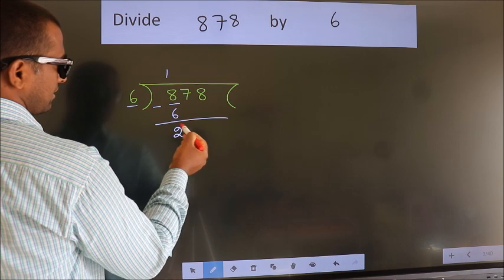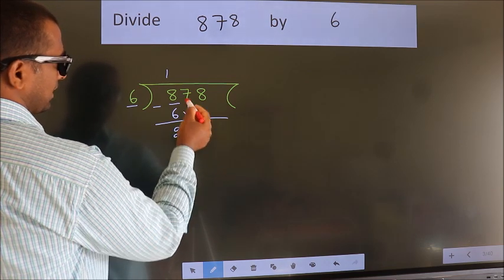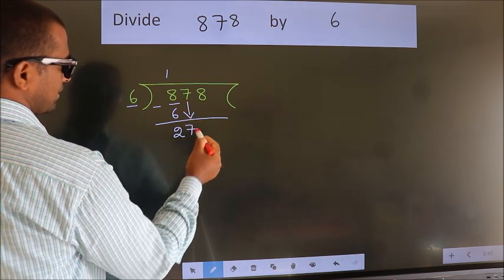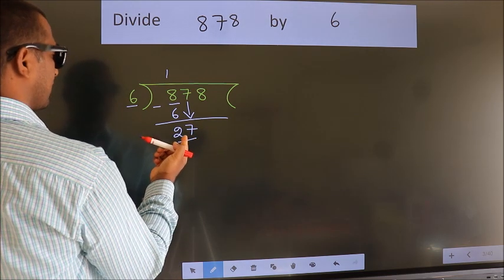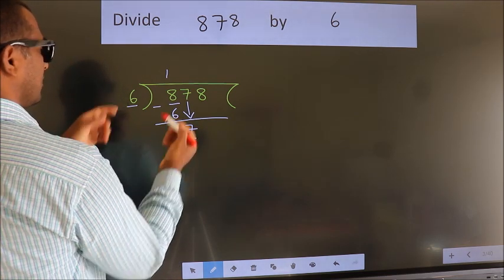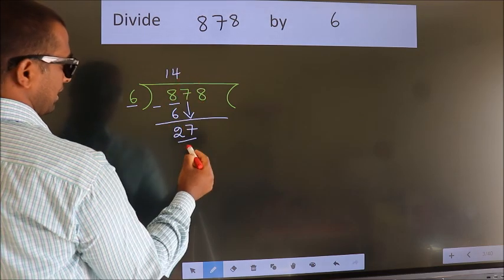After this, bring down the next number. So, 7 down, making 27. A number close to 27 in the 6 table is 6 times 4, which is 24.